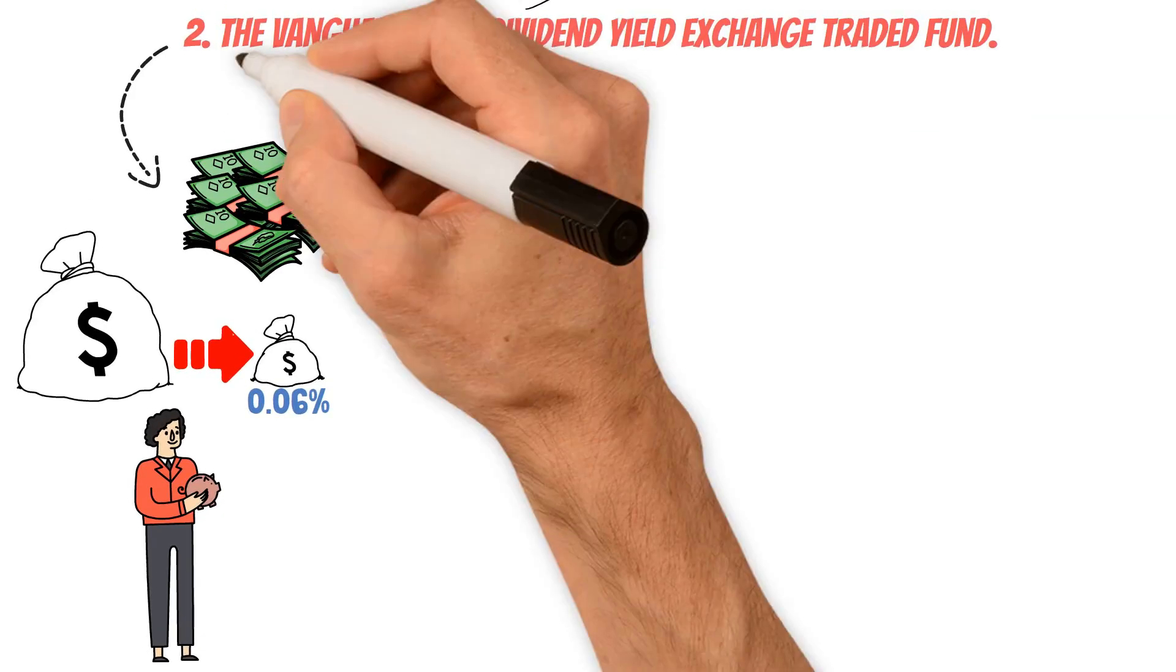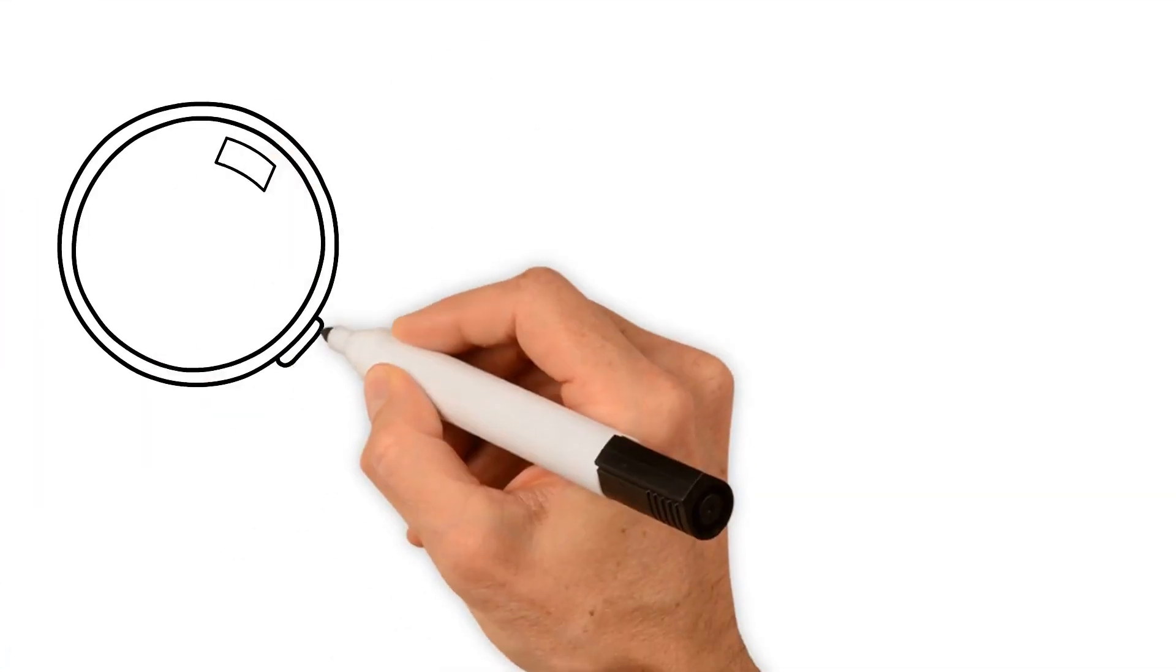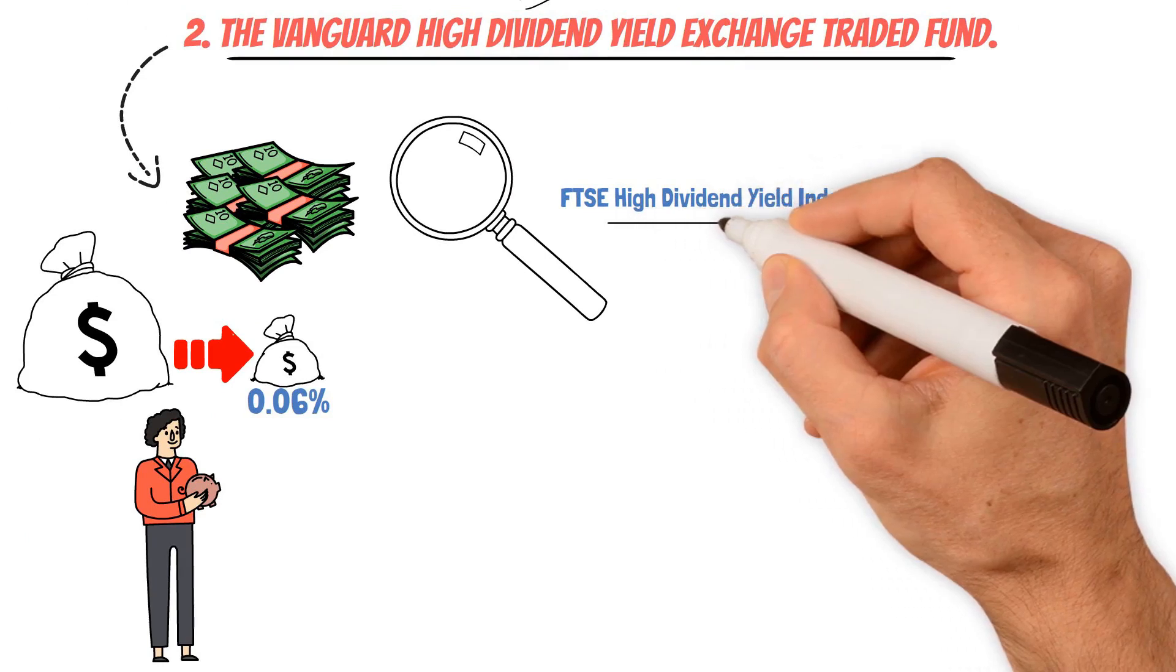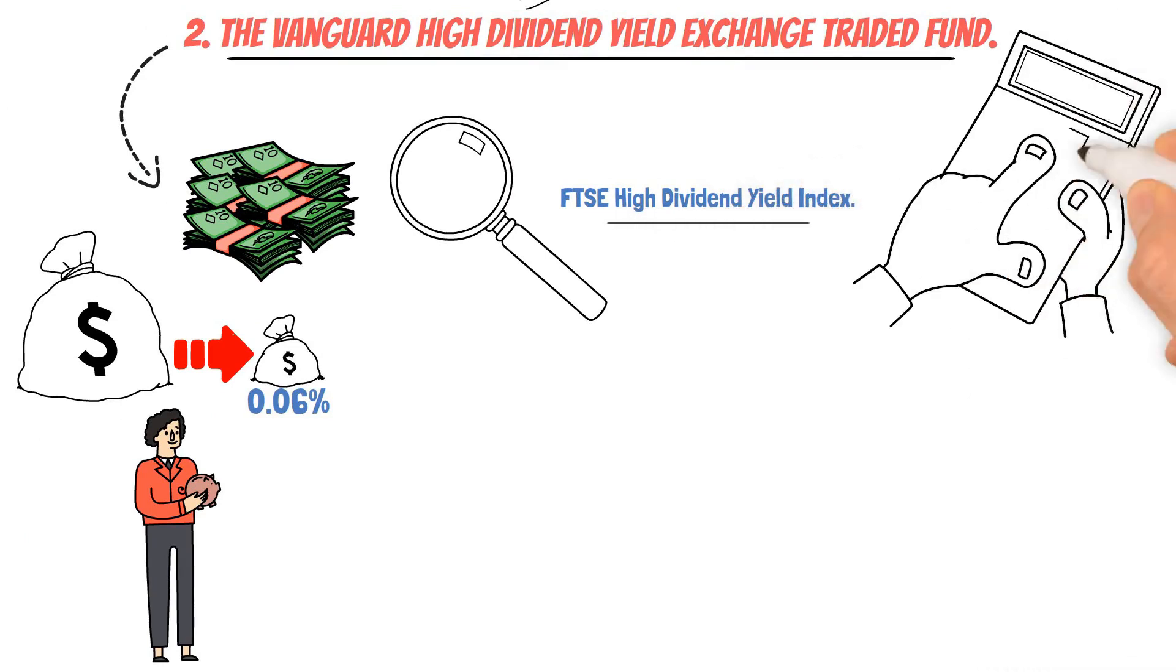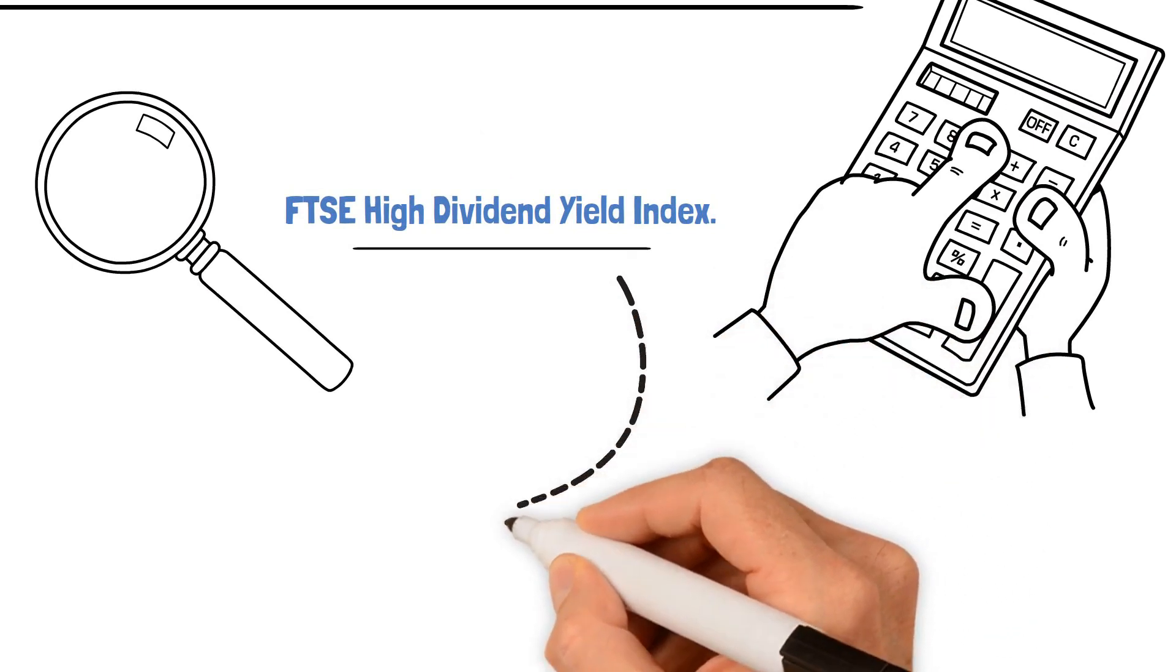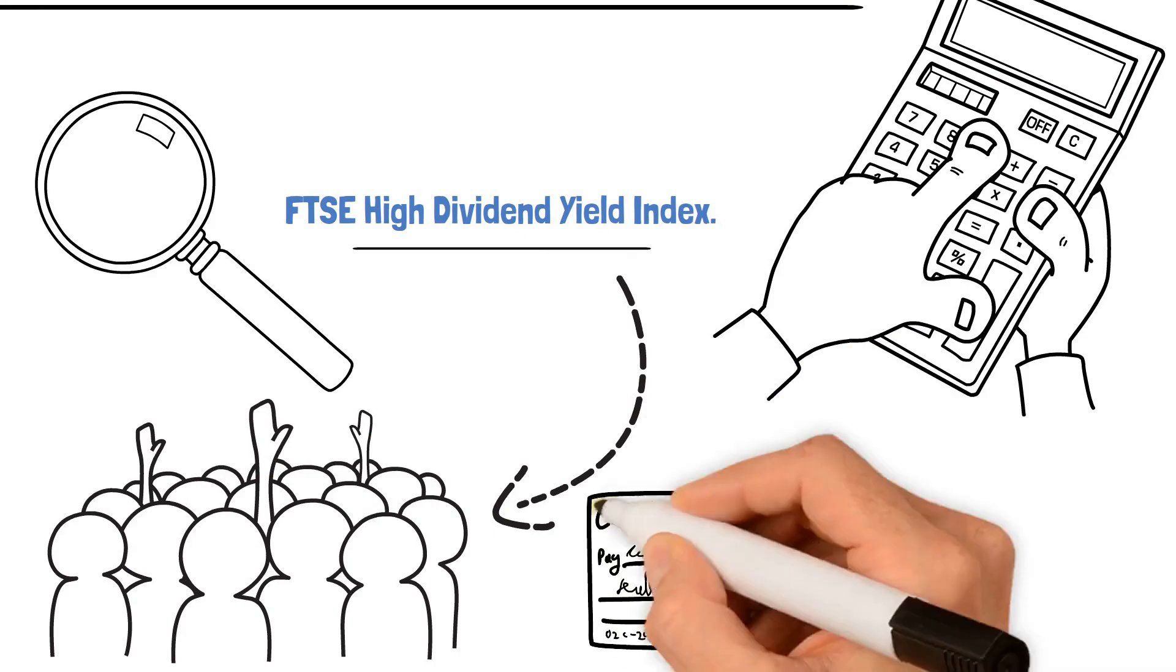The primary objective of the Vanguard High Dividend Yield ETF is to track the performance of the FTSE High Dividend Yield Index. This index is designed to measure the investment return of stocks with high dividend yields, making it an ideal choice for income-oriented investors prioritizing consistent dividend payments.